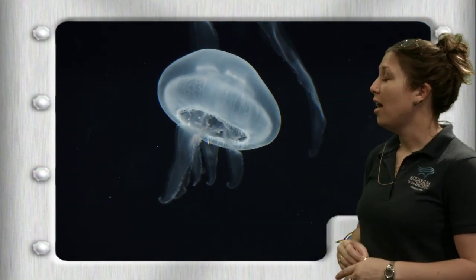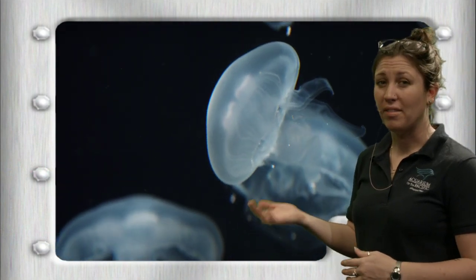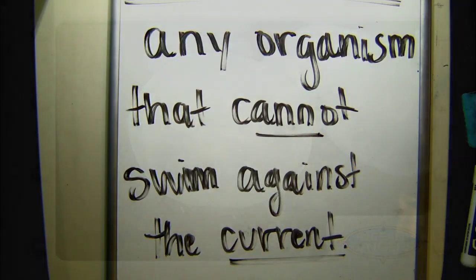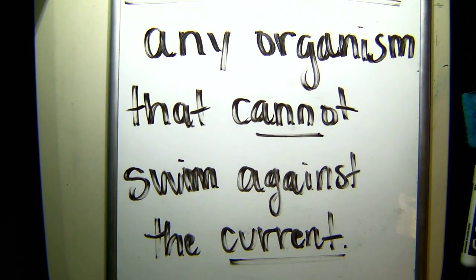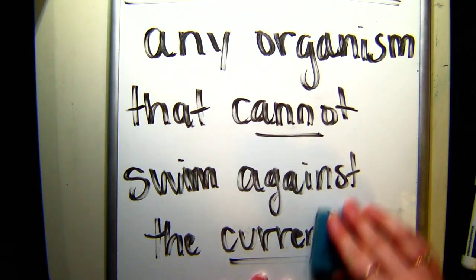Jellies are one example of that, and we'll talk more in detail about them in a moment. But first, let's break plankton down into its two groups.